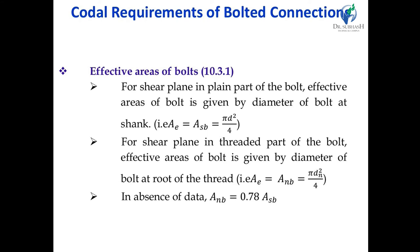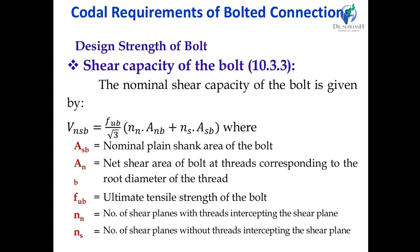Next, effective area of bolt. How do we calculate the effective area of a bolt? Given in clause 10.3.1: for the shear plane at the plain (shank) part of the bolt, the effective area A is calculated using the shank area — the standard circle area pi/4 × d². For the shear plane at the threaded part of the bolt, the effective area is equal to 0.78 × ASB, where ASB = pi/4 × d². These are the effective areas.